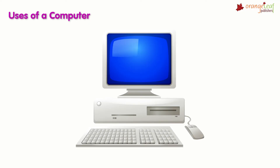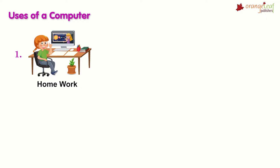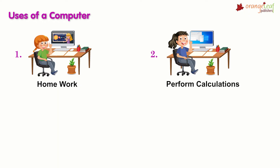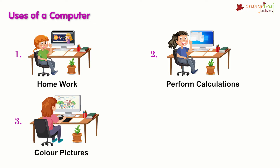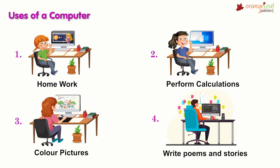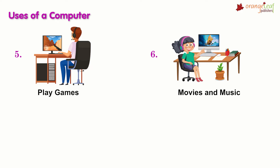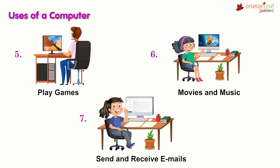Uses of a computer: a computer can be used for a variety of tasks. Number 1: we can participate in online classes and do our homework. Number 2: we can use a computer to perform calculations. Number 3: we can use a computer to sketch and color pictures. Number 4: we can write poems and stories on a computer. Number 5: we can use a computer to play games. Number 6: we can have access to movies and music using a computer. Number 7: we can use a computer to send and receive emails.